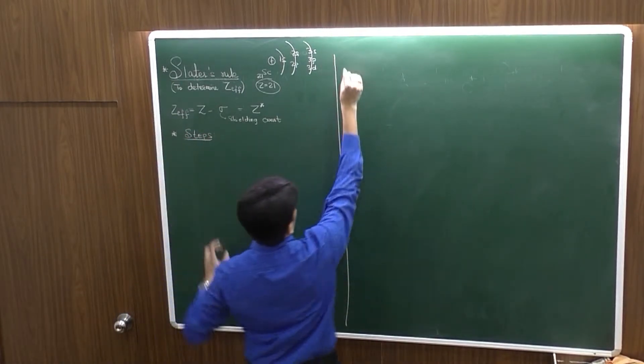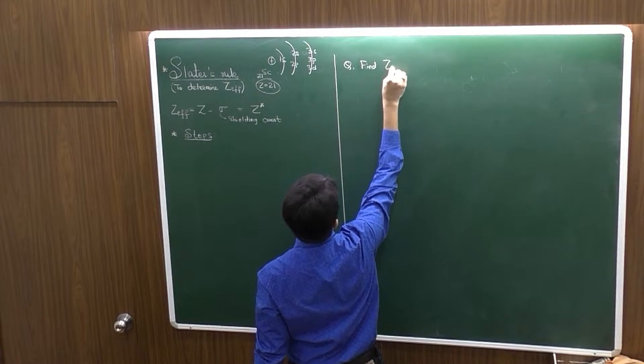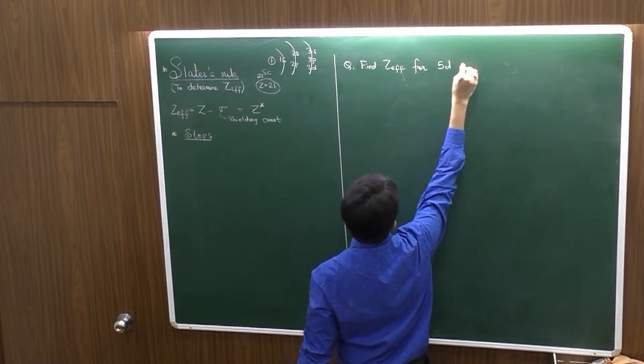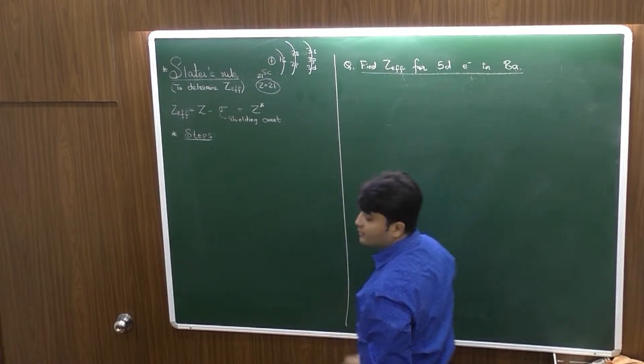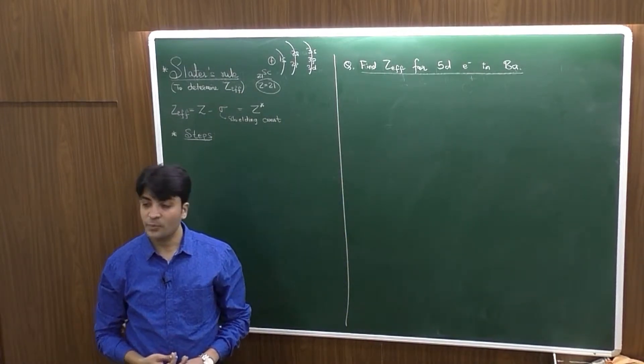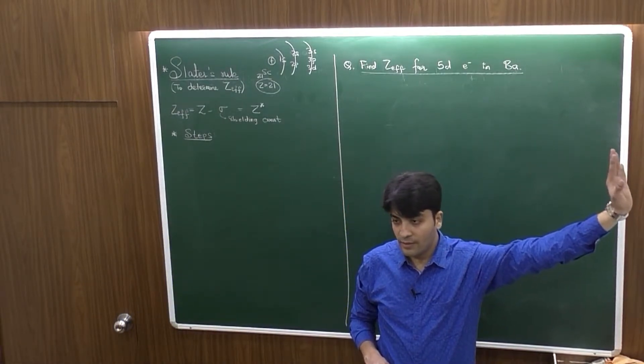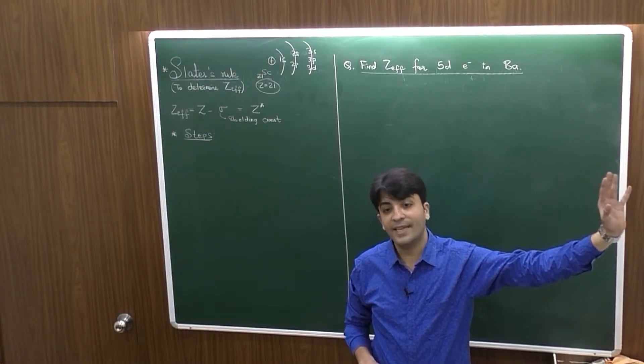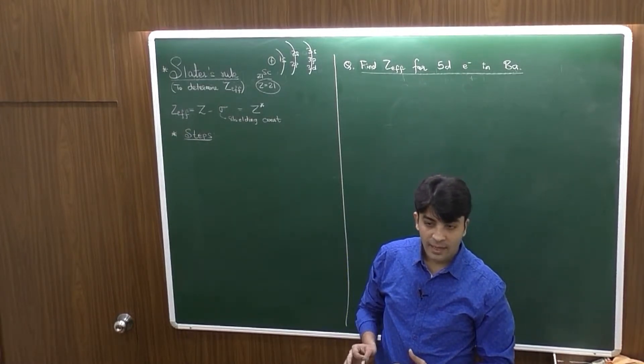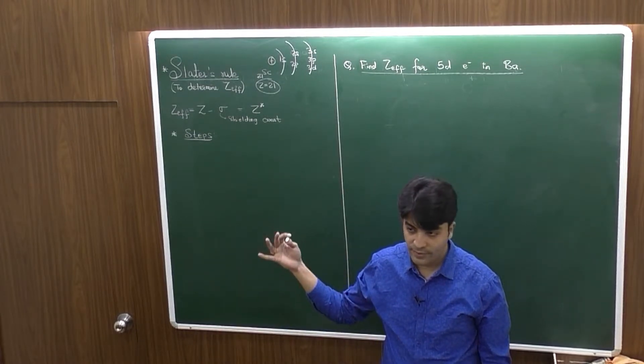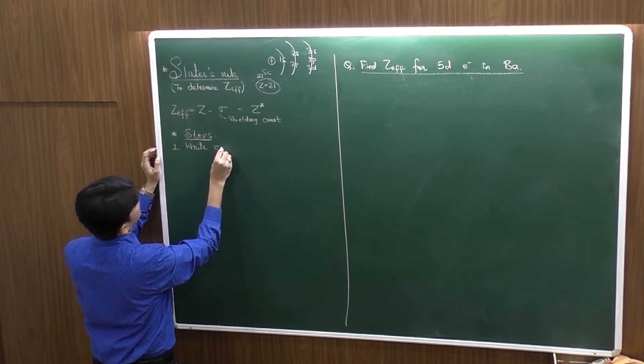So, what steps to follow, and how questions will come, I'm explaining both together. Let's say the question is, find Zeff for 5D electron in barium. Find effective nuclear charge for 5D electron which is present in barium. So first, write electronic configuration.